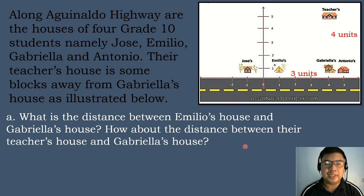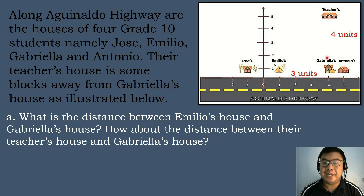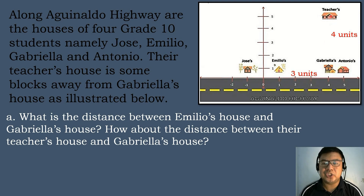How about the distance between their teacher's house and Gabriela's house? The teacher's house coordinate is (4, 5), while Gabriela's house is (4, 1). We will just count the vertical distance: 1 unit, 2 units, 3 units, and 4 units. So the distance between the teacher's house and Gabriela's house is 4 units.